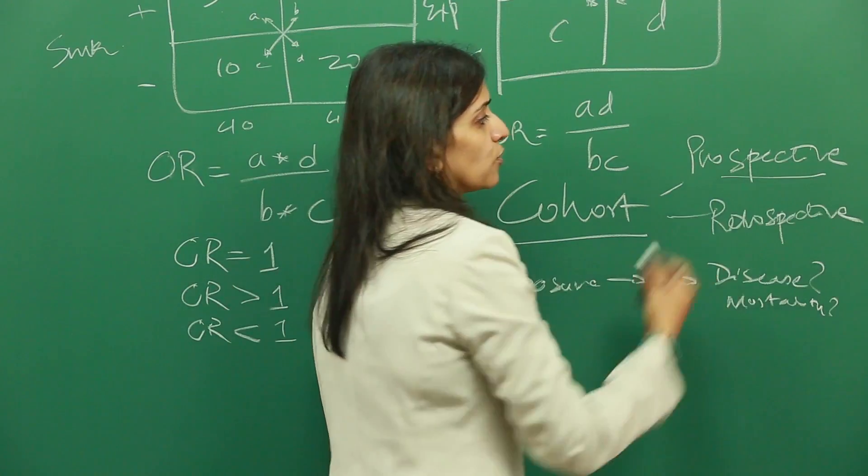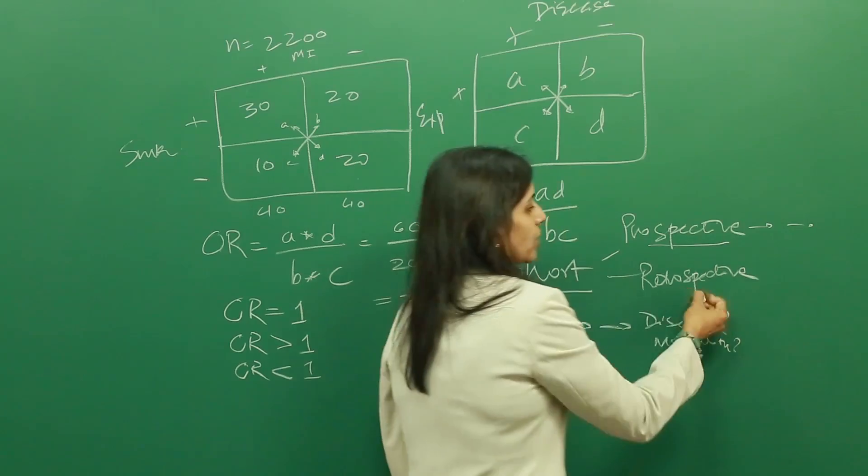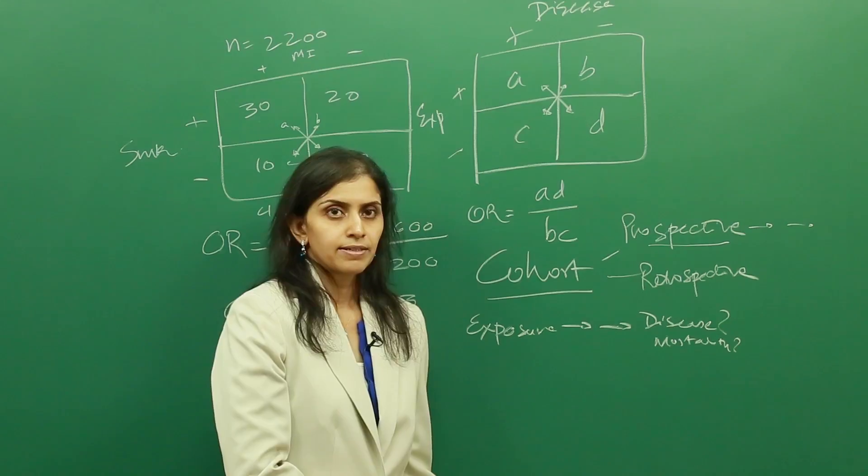Prospective studies, prospective cohorts, are fairly easy to understand. You start with a cohort, you follow them forward in time. Retrospective cohort is the same as a prospective cohort, except that it started back in time.